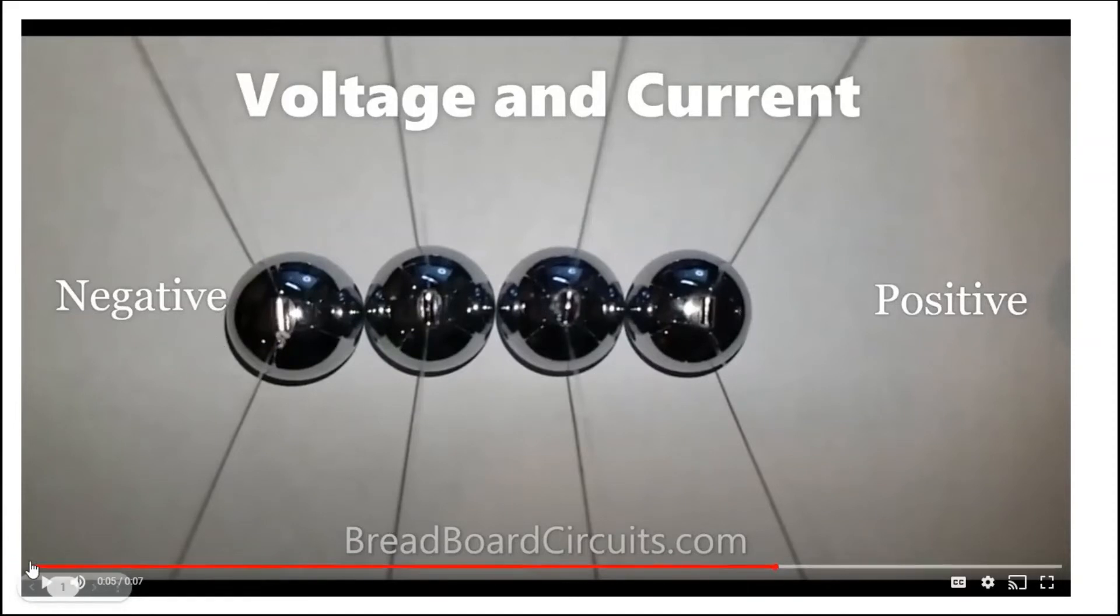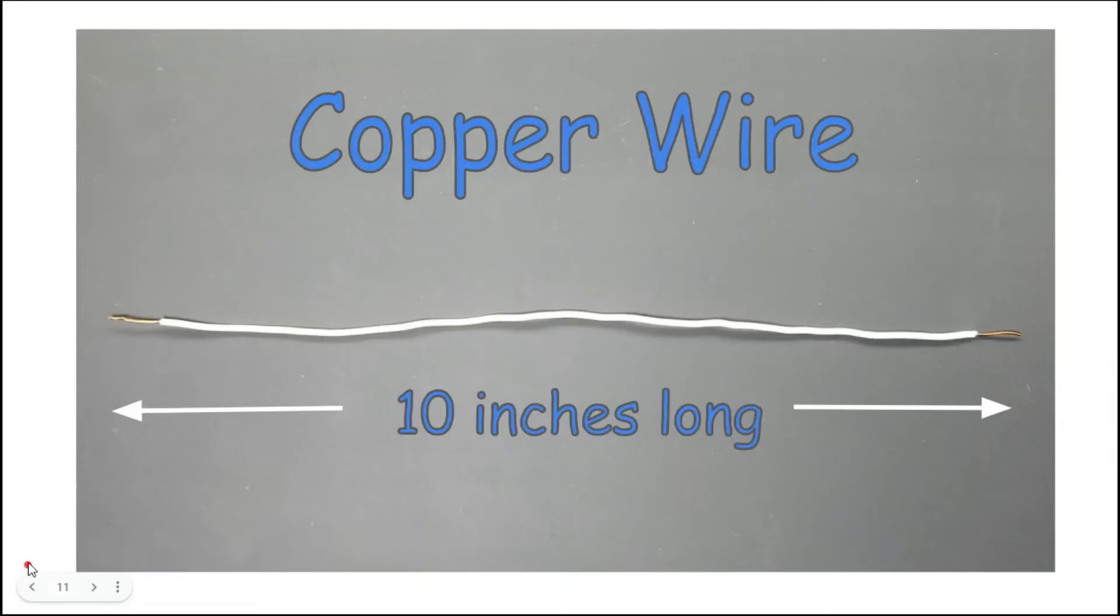Take this 10-inch long piece of 14-gauge wire, for instance. You might have heard that electrons in a wire travel at the speed of light. Well, not really. In fact, the actual electron that enters the left side of this wire would take almost two hours to reach this side of the wire at one amp of current. It's the displacement process, or the chain reaction, that occurs almost instantaneously.